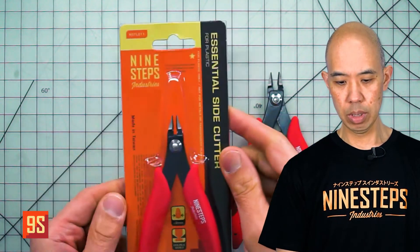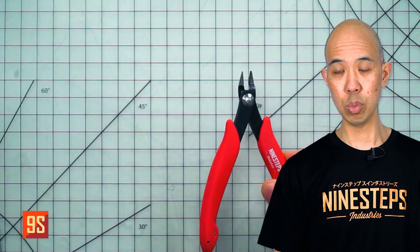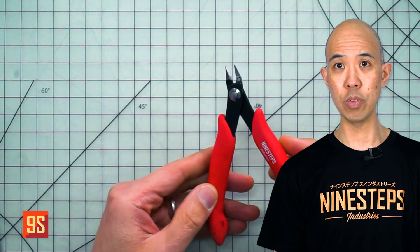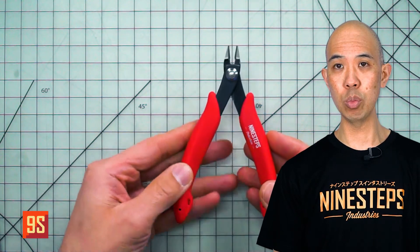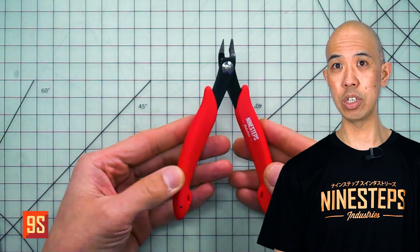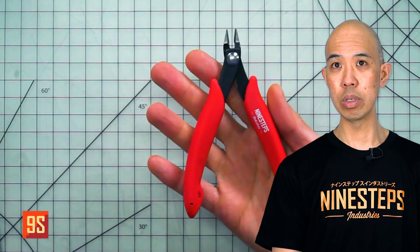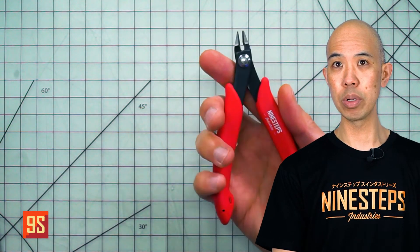The particular side cutters we have here are drop forged from high carbon steel and they're designed with very large handles, so they're very easy to put in your hand and to grip quite comfortably.